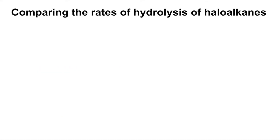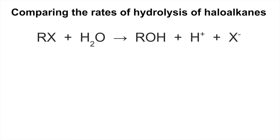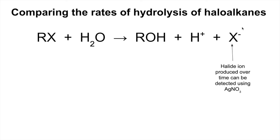We'll look at how to compare the rates of hydrolysis of haloalkanes. The halide ion is produced over time and we can use silver nitrate in the reaction mixture to detect its presence. It's going to produce a silver halide precipitate.